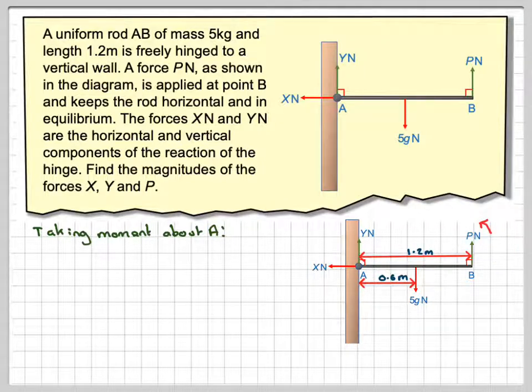Okay, so going anti-clockwise, we're going to have P times 1.2. And then going clockwise, we're going to have to take away 5G times 0.6. And that's going to be equal to 0 because the thing is in equilibrium.